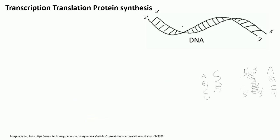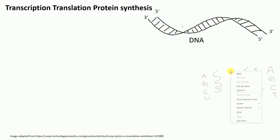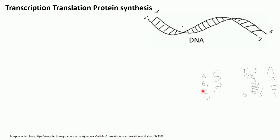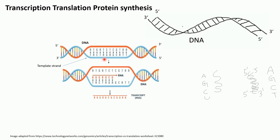Hello everyone. In this lecture today I'm going to talk about transcription, translation, and protein synthesis. Before I start, I'll give you a brief idea about DNA. DNA is a double-stranded molecule with four nucleotide bases: adenine (A), guanine (G), cytosine (C), and thymine (T). RNA is a single-stranded molecule, and its bases are adenine, guanine, cytosine, and uracil.